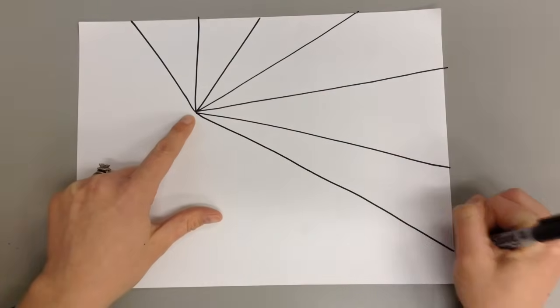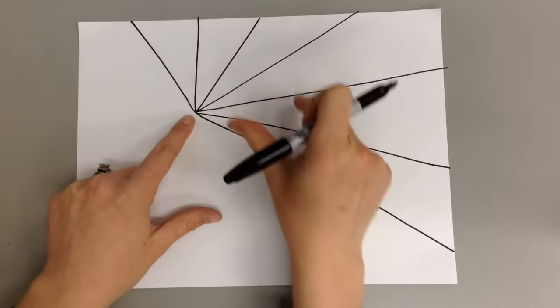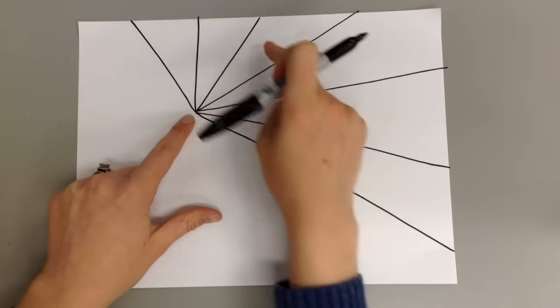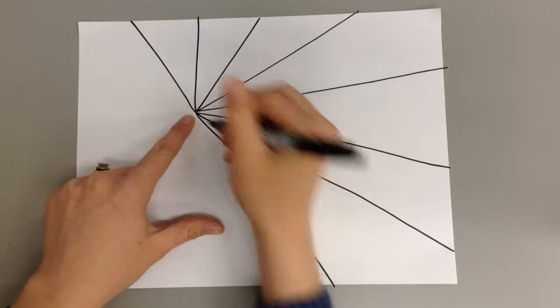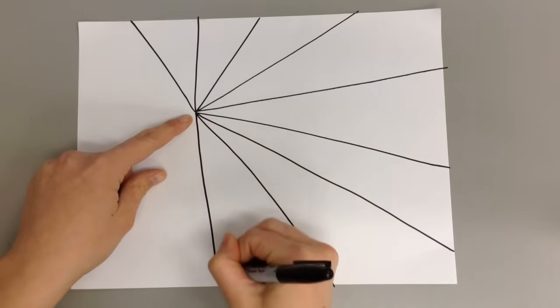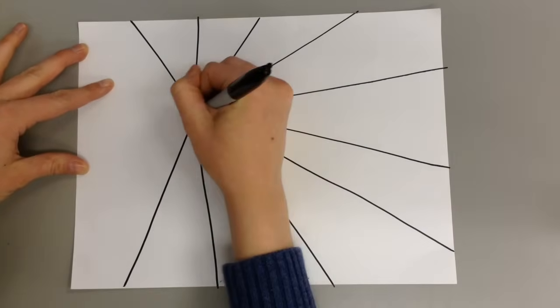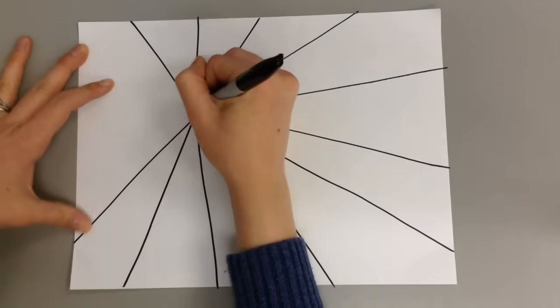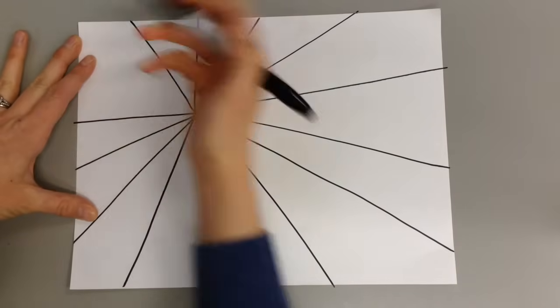Now our goal is to have an even number of sections. So far I have six. So I'm going to count.